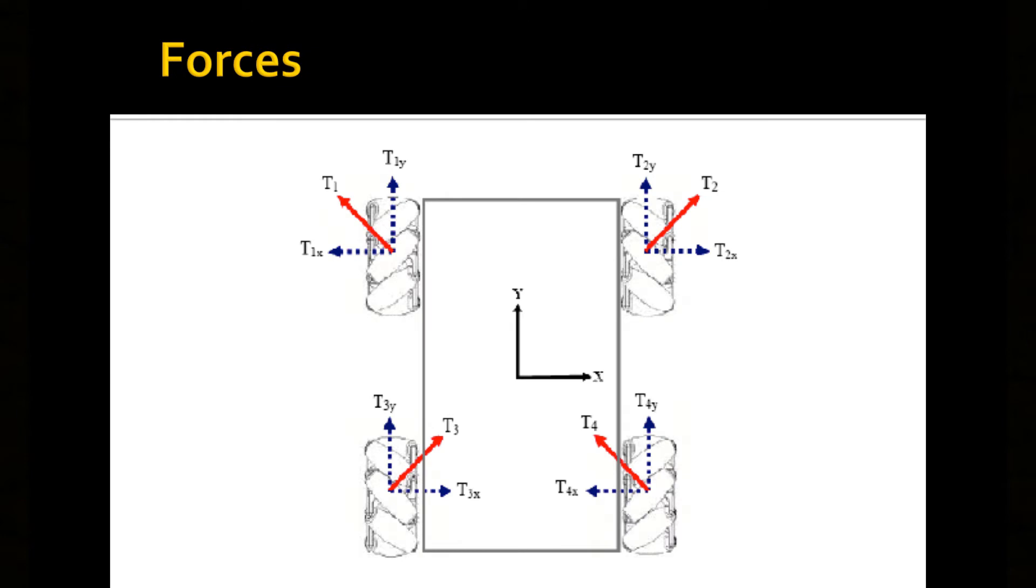Here's a force diagram for the mecanum drive train. As you can see, each wheel has a red arrow pointing in the direction of travel for each individual wheel, but also blue arrows for the X and Y components. This is to your advantage because you can manipulate these forces to make sure they cancel out.